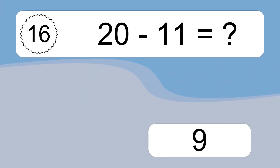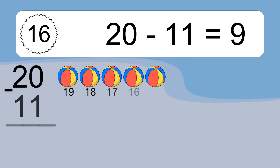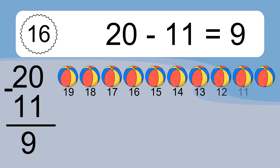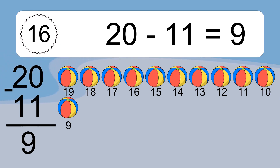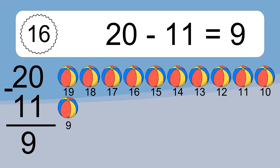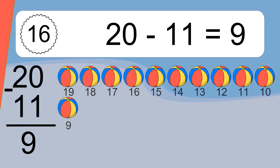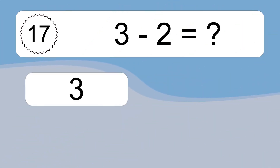20 minus 11 equals what? 20 minus 11 equals 9. Let's count it: 19, 18, 17, 16, 15, 14, 13, 12, 11, 10, 9.